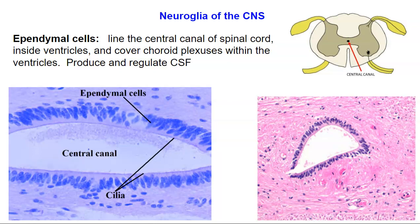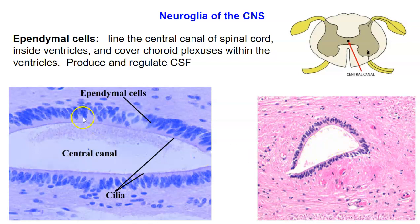The next type of glial cell is called an ependymal cell. The ependymal cell lines the central canal of the spinal cord. Here's the spinal cord with a little opening called the central canal — it's hollow and the only thing found in there is cerebrospinal fluid. The ependymal cells are responsible for producing, regulating, and monitoring the conditions of that spinal fluid. Here's a zoomed-in shot showing the ependymal cells lining the central canal of the spinal cord.